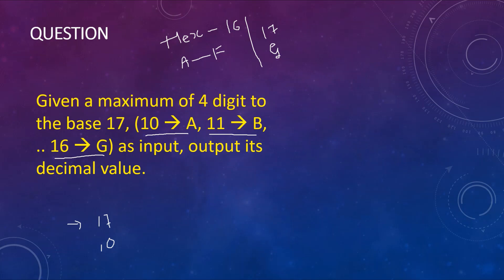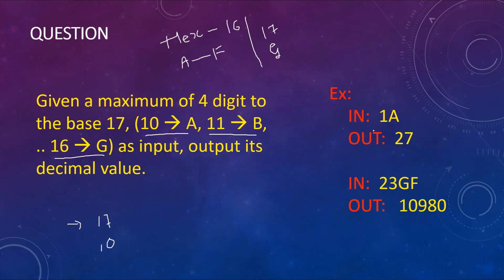Let us look at the example: the given input is 1A and the output is 27. A stands for 10 and is in the units place, so it is multiplied by 1. The 1 is in the 17s place, so it is multiplied by 17. Therefore 17 plus 10 gives 27. Similarly, 23GF is in base 17 and its output should be around 10,979.